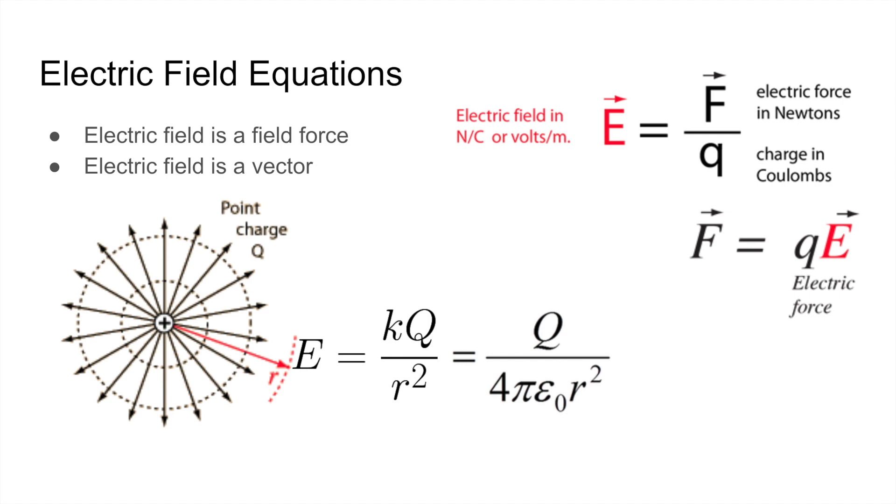The electric field of a point charge is given by Coulomb's constant times its charge divided by the radius squared, or the distance squared, which equals q over 4π epsilon₀ times r squared. Note that this is only for one single charge. If we have more than one charge or a distribution of charges, we're going to have to do some integration or summing, which we'll go over later in the video.